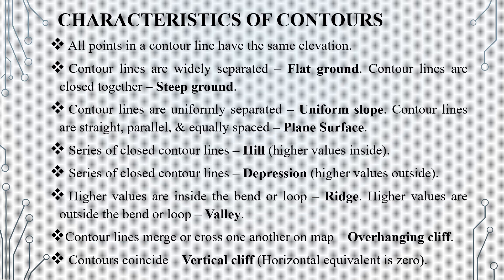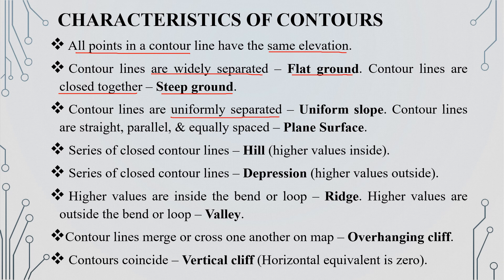The characteristics of contours: First, all points on a contour line have the same elevation. Where the ground is flat, contour lines are widely spaced. Where the ground is steep, contour lines are close together. For a uniform slope, contour lines are uniformly separated. For a plain surface, contour lines are straight, parallel, and equally spaced.